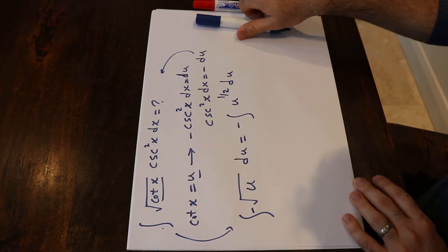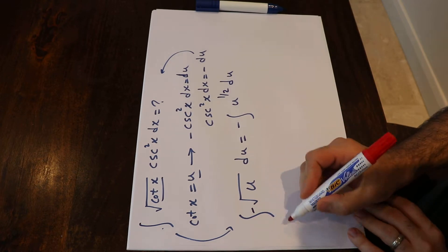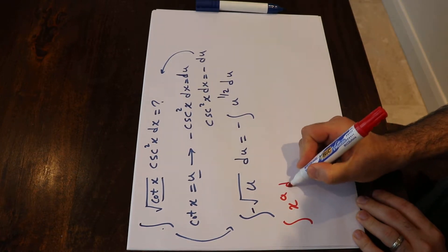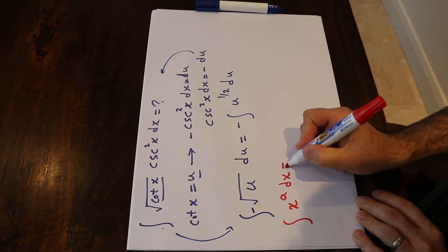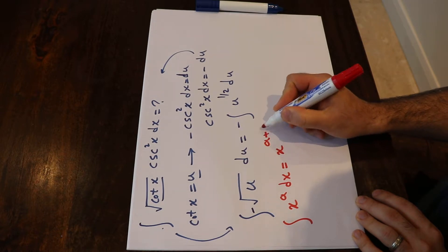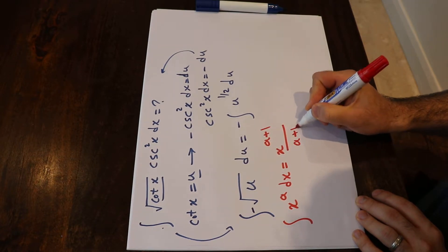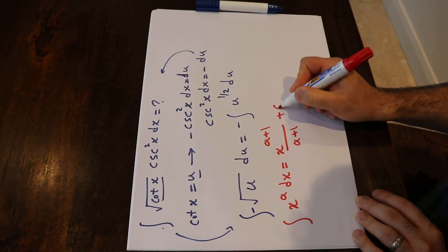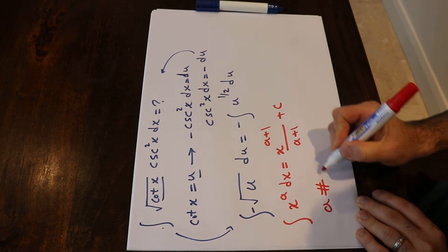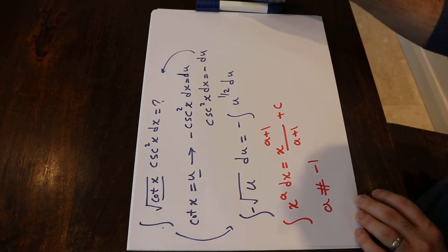To solve this integral, you need to know one formula: the integral of x to the power of a dx will be equal to x to the power of a plus one, divided by a plus one, plus c, assuming a is not equal to minus one.